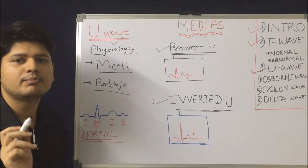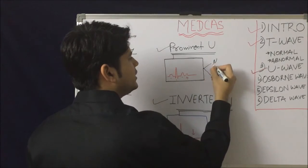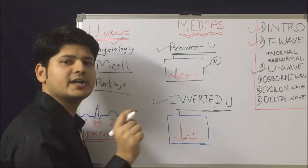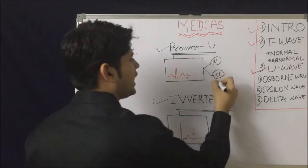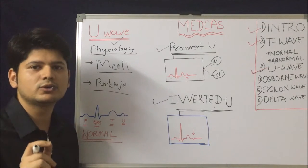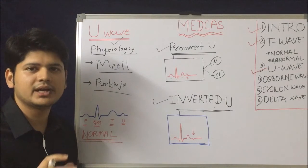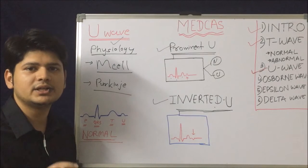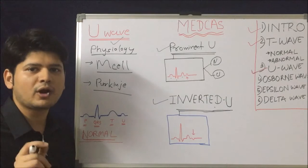Which conditions show a prominent U wave? Normally, a prominent U wave can be seen with bradycardia. Other causes of prominent U wave include hypokalemia, which is a very classic association. Along with that, hypocalcemia, hypomagnesemia, and hypothermia can also cause prominent U wave. Some drugs like digoxin and class 1 and class 3 antiarrhythmics also cause the prominent U wave.